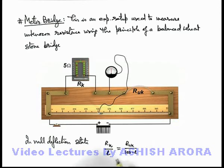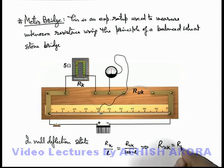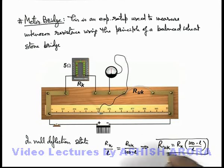If l is measured in centimeter and on simplifying this expression, we'll get the resistance Ruk which can be written as Rk times 100 minus l by l. Using this expression we can find out the unknown resistance.